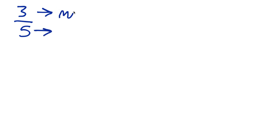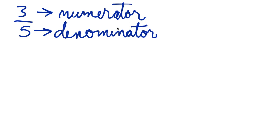The top number is called the numerator, N-U-M-E-R-A-T-O-R. The bottom number is called the denominator, D-E-N-O-M-I-N-A-T-O-R. The denominator is on the bottom.